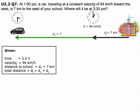So what we're given here is a time of 2.5 hours, from 1 o'clock to 3:30. We know the car is going 94 km an hour. The distance the car is at the start from the school is 7 km, and the total distance the car goes is the dx, which is the green arrow, and the ds, which is the black arrow.